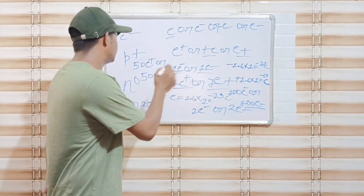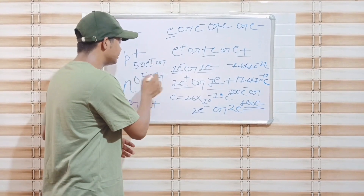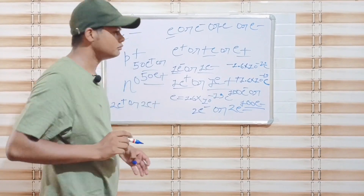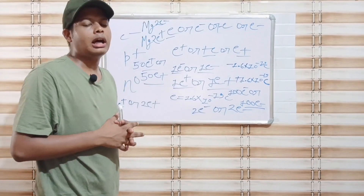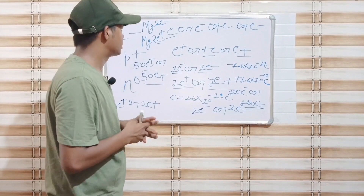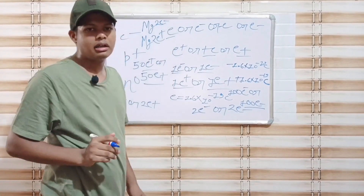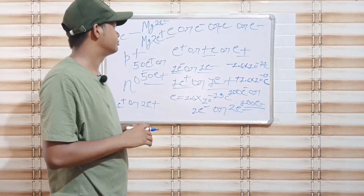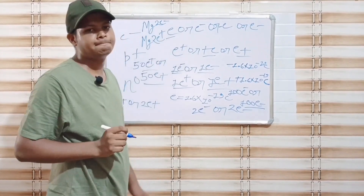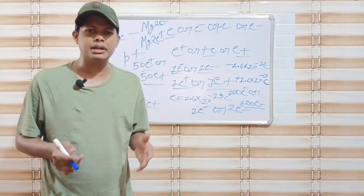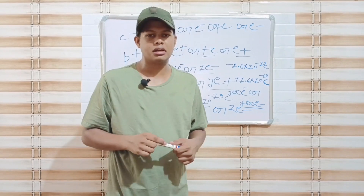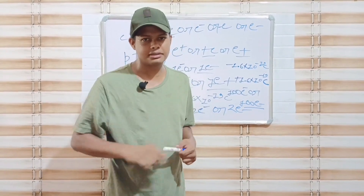Agar koi atom 2 electron leta hai, jaise ki magnesium, to uska charge mg 2e negative hoga. Agar magnesium mein 2 extra proton hain to uska charge mg 2e positive hoga. Now the video is over. Bye bye and keep your eyes on the small topics.